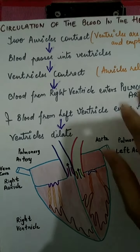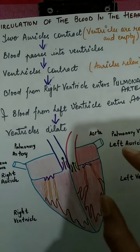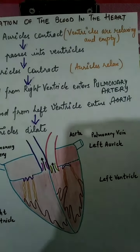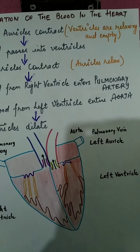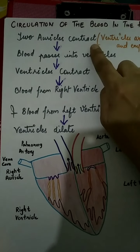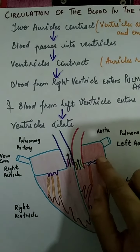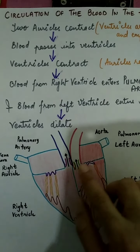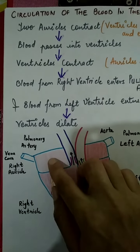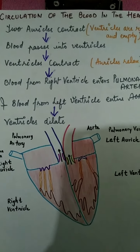The process begins when the two auricles contract. When the auricles are contracting, the ventricles are in a relaxed state and they are empty — they do not have anything in them. So when the auricles contract, the tricuspid valve and the bicuspid valve get open, and the blood from both auricles enters into the respective ventricles.